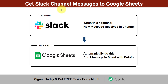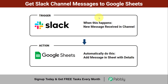In this video I will show you how to get Slack channel messages to Google Sheets automatically. Whenever any new message is received in your Slack channel, we are going to automatically add that message into the sheet along with all details. For example, suppose you have created a channel on Slack for your product sales and you want those sales details synced with your Google Sheet as well.